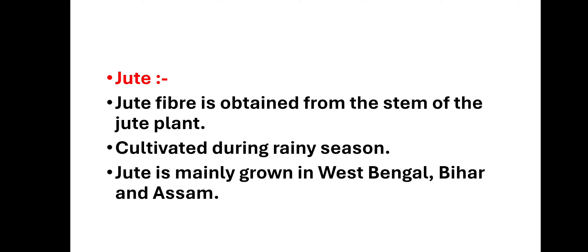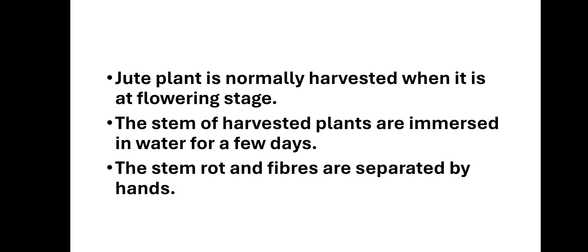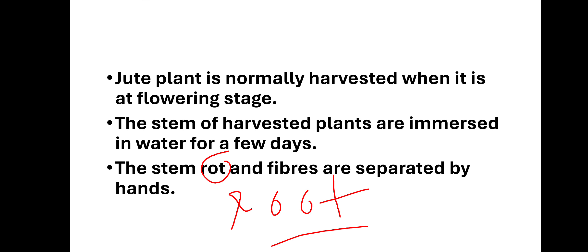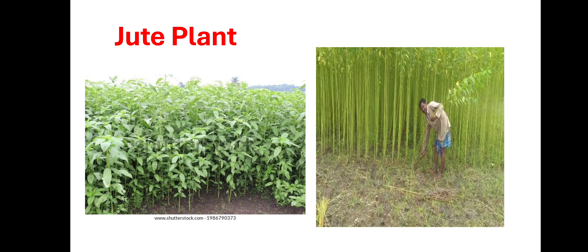अब jute — jute fiber is obtained from the stem of the jute plant। यह rainy season में cultivate होता है। Best areas जहां पर यह grow होता है वो हैं West Bengal, Bihar और Assam। Jute plant is normally harvested when it is at the flowering stage — उसी समय उसको collect कर लिया जाता है। The stem and fibers are separated by hands — इसको हाथ से separate किया जाता है। This is the jute plant.